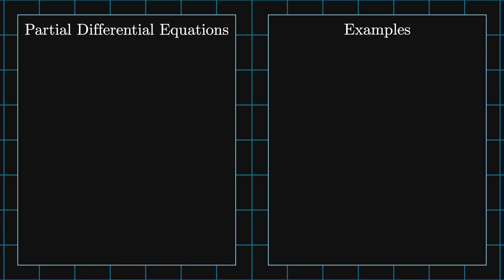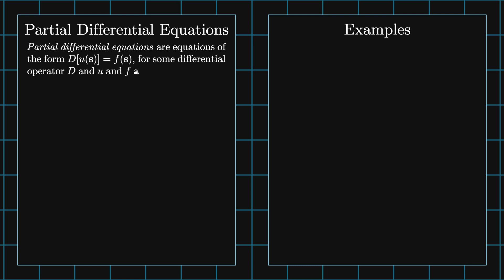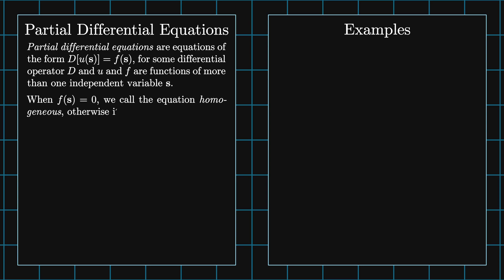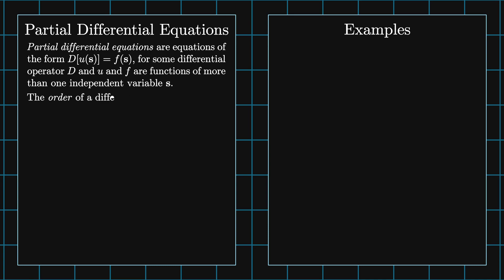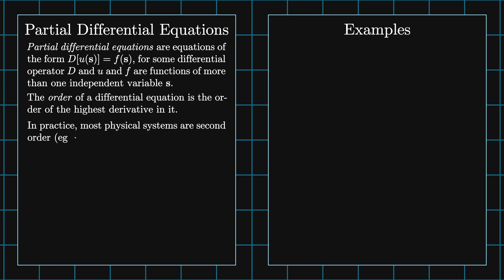In this unit, we'll be looking at partial differential equations. Partial differential equations are equations of the form D acting on U as a function of S is equal to F of X, where D is a differential operator and U and F are functions of more than one independent variable S. When F of S equals zero, we call the equation homogeneous; otherwise it's inhomogeneous. The order of a differential equation is the order of the highest derivative in it. In practice, most physical systems are second order.